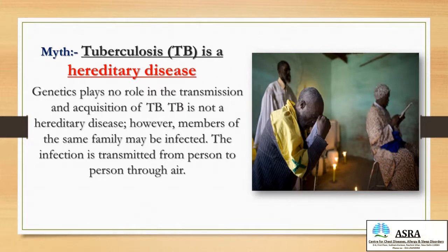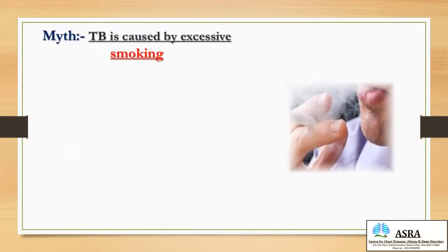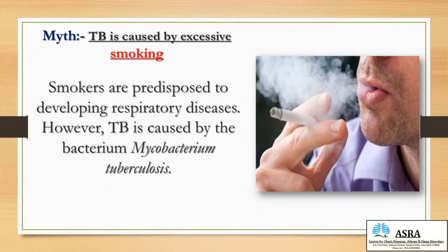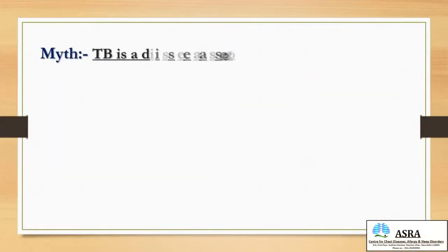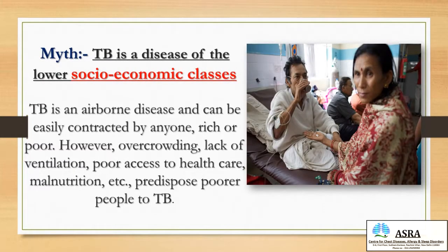Genetics plays no role in the transmission and acquisition of TB — it is not a hereditary disease. However, members of the same family may be infected, as the infection is transmitted person to person through the air. Smokers are predisposed to respiratory diseases, but TB is caused by Mycobacterium tuberculosis and is not due to excessive smoking. TB is an airborne disease and can be contracted by anyone, rich or poor, though overcrowding, lack of ventilation, poor access to healthcare, and malnutrition predispose poorer people to tuberculosis.